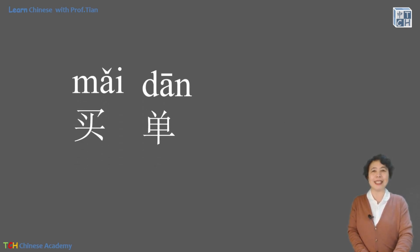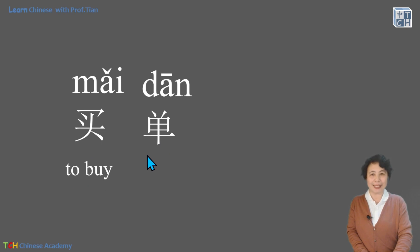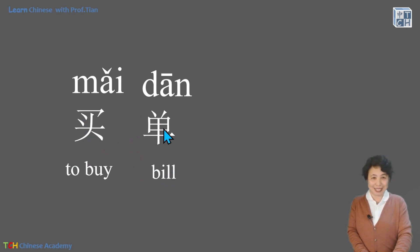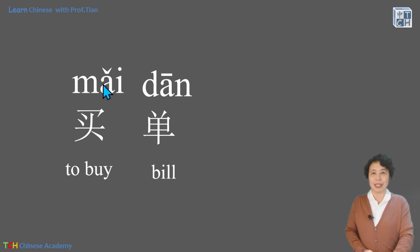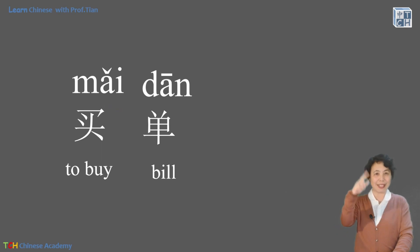The key word is 买单. 买单 means to buy the bill — exactly the same meaning. Let's see how to pronounce these two words. Look at the vowel of 买: it's A-I, pronounced 埃. Here it is the third tone.